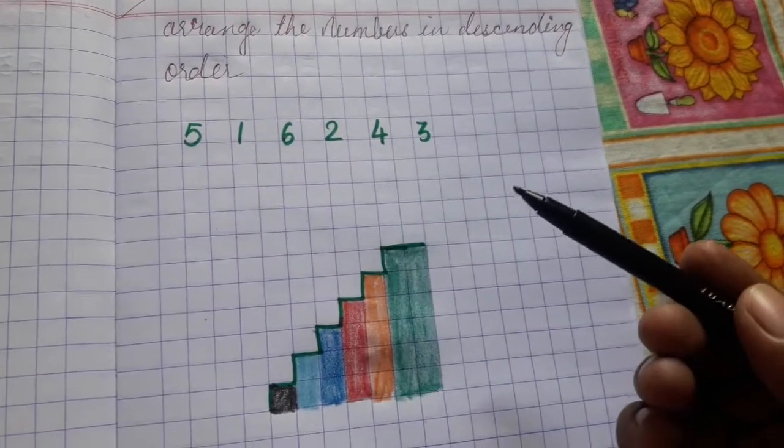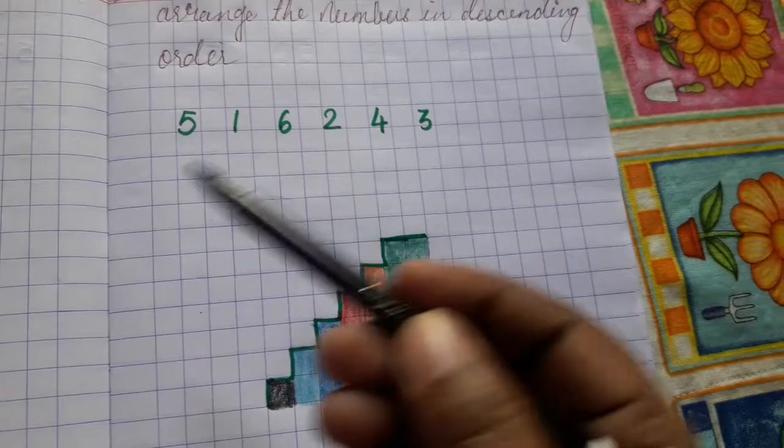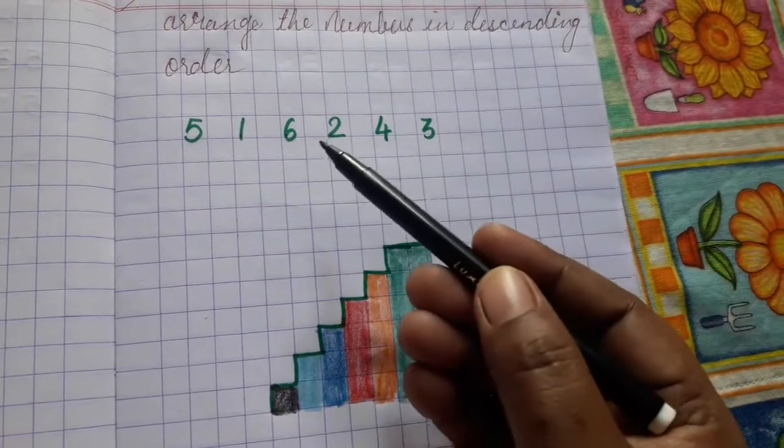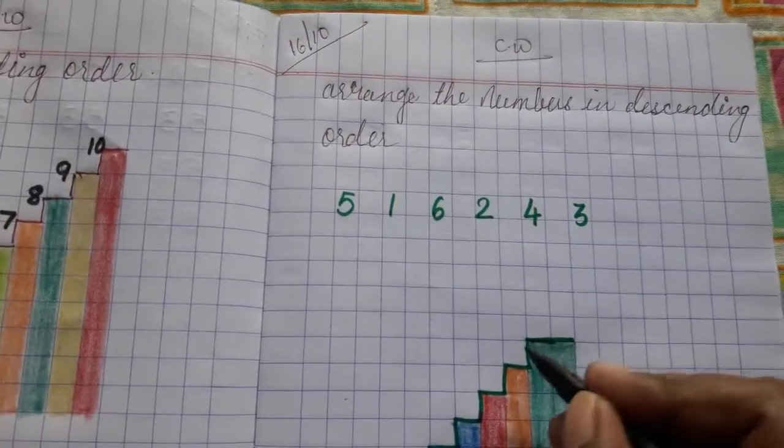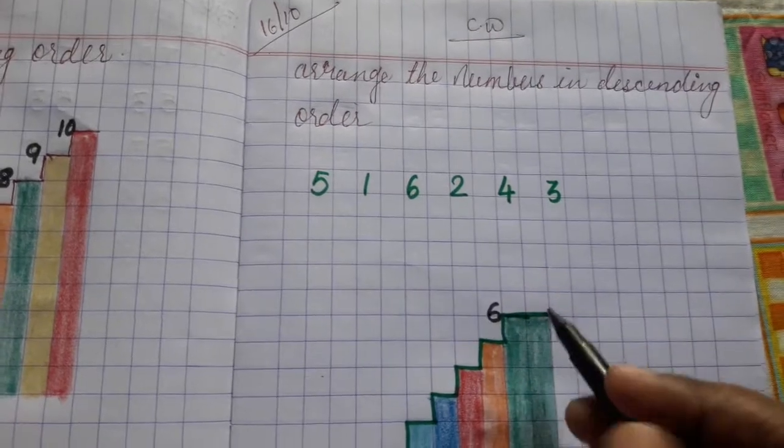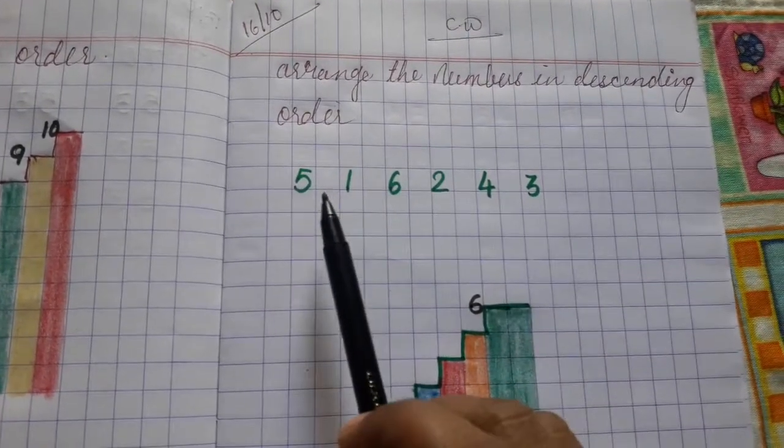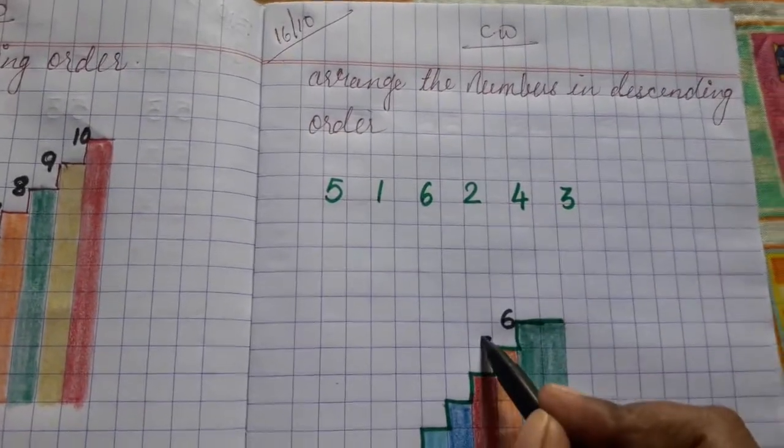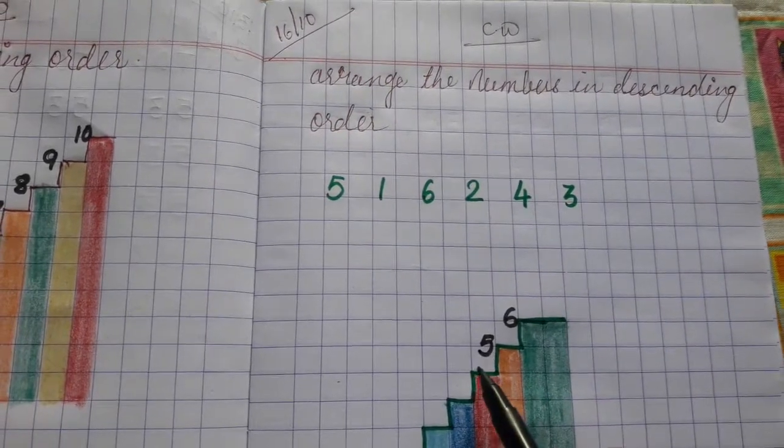So first, which number will come? The biggest number. Which number is the biggest number? Yes, 6. So write here 6. Next, which number? Yes, very good, 5. Write here 5.